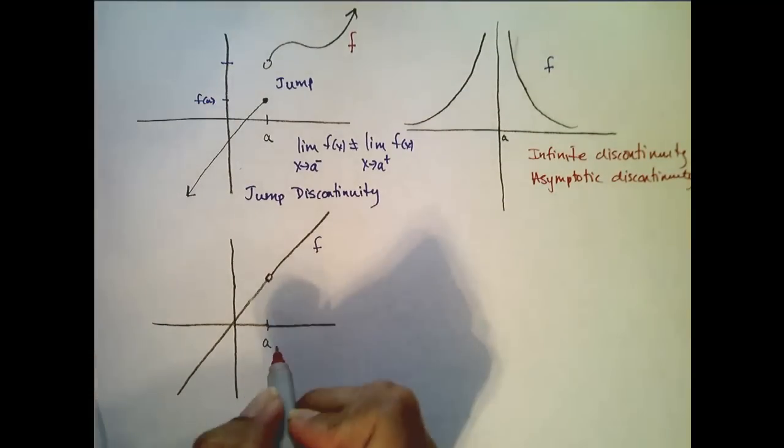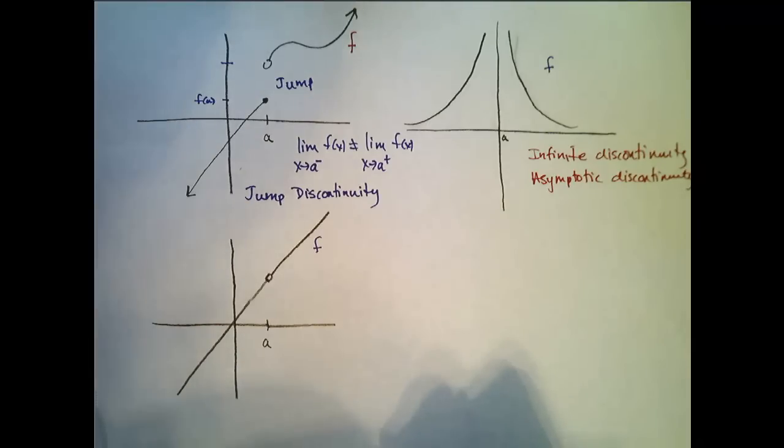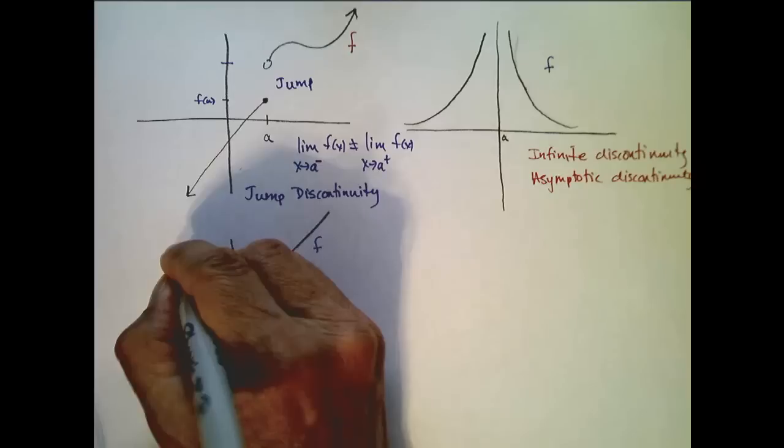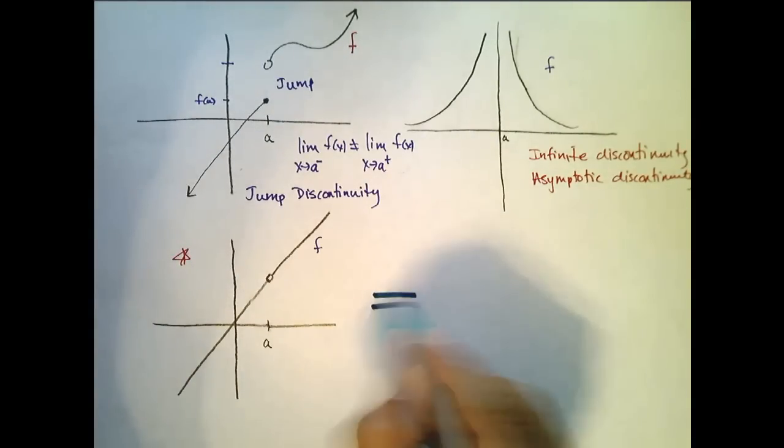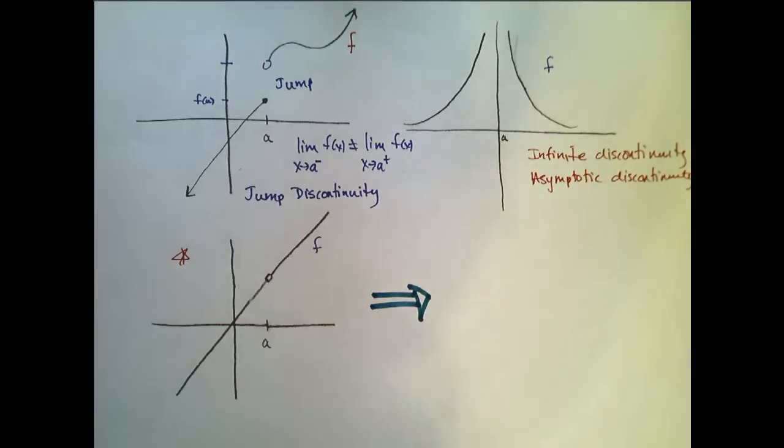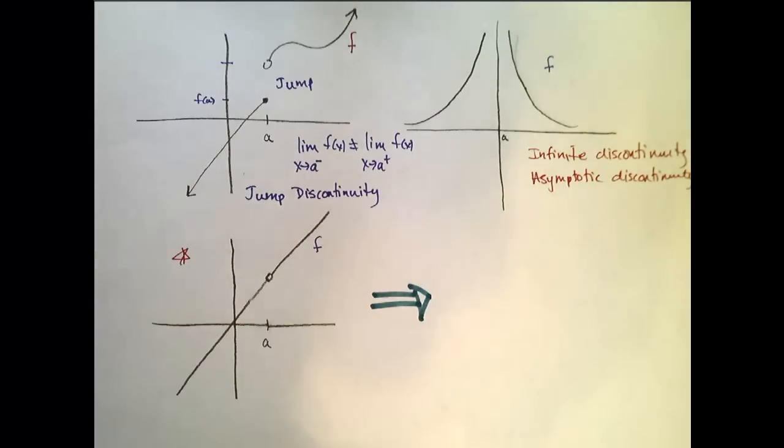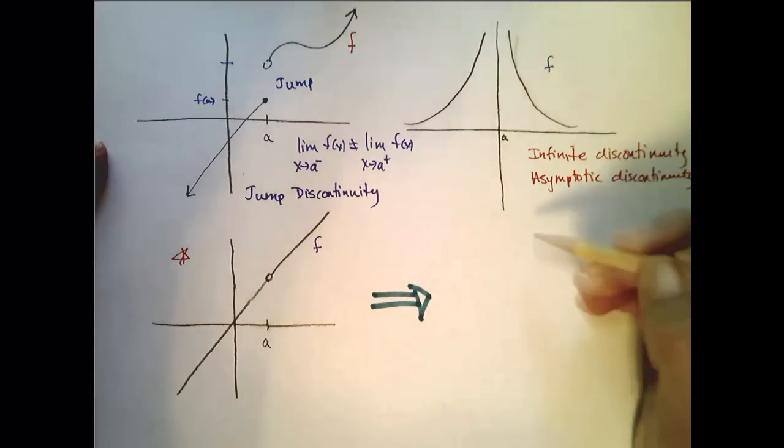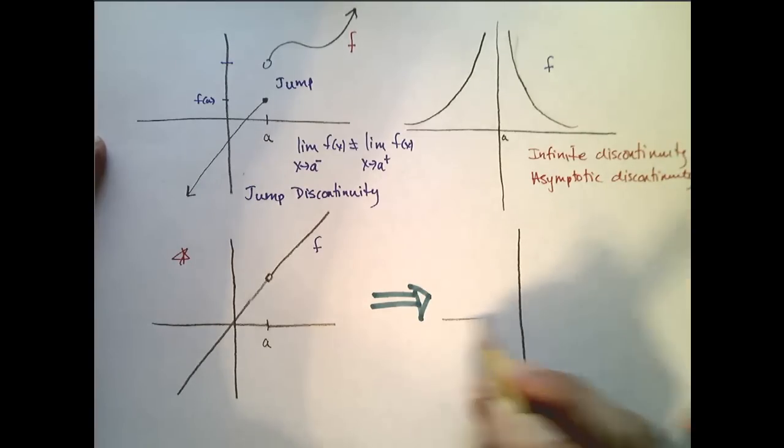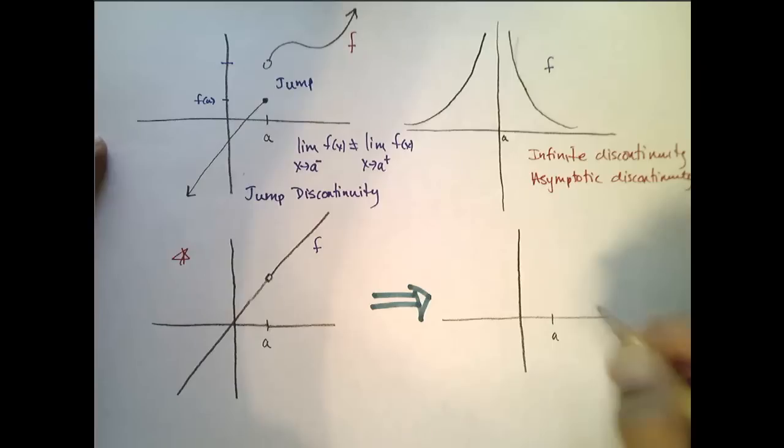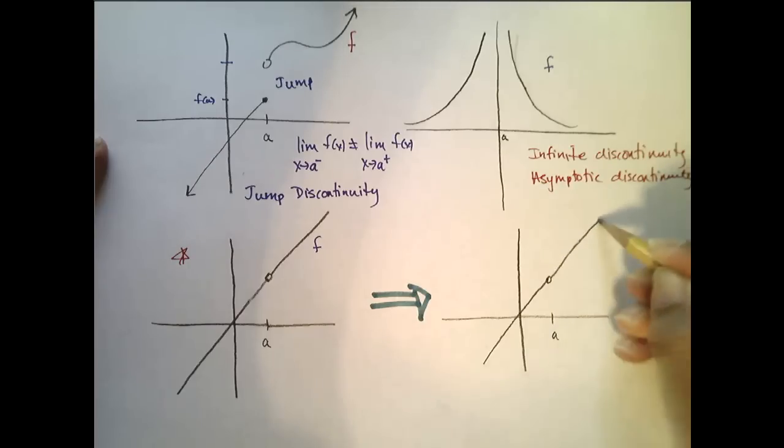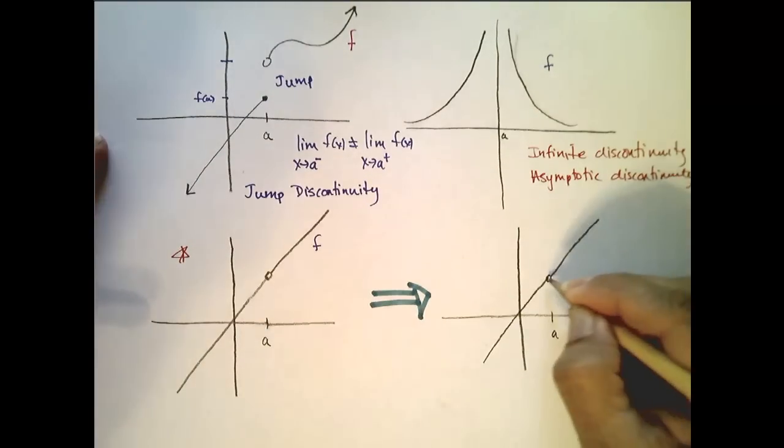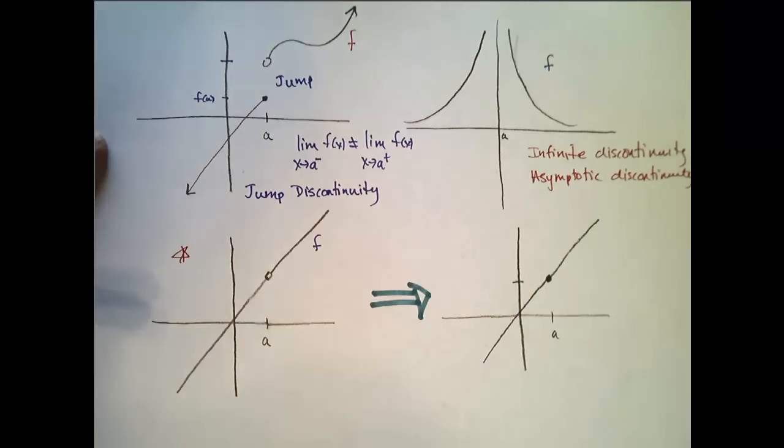Alright, and then this last one, well we see here that f(a) isn't even defined. But this one is kind of a special one because I could create a new function. We won't call it f because f is how we define it here. So a new function based on this f right here. I'll draw it to the right that looks just like f. Like that a. So it's going through... Now it still looks like f, except at a I'm gonna fill it in with this value right here.